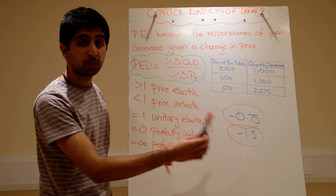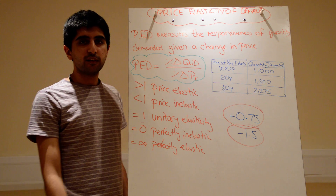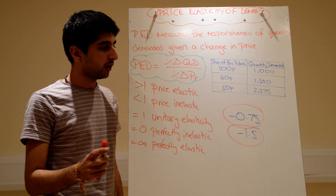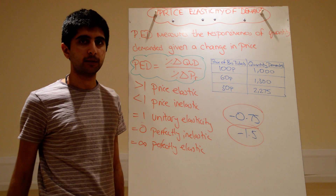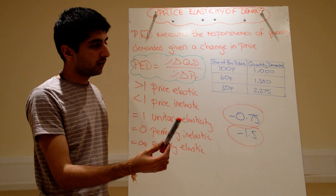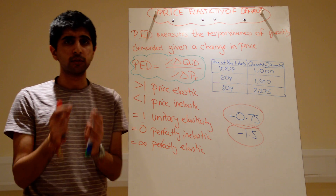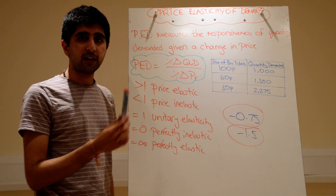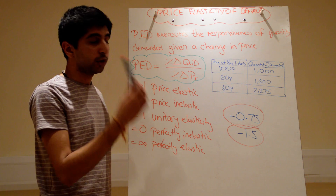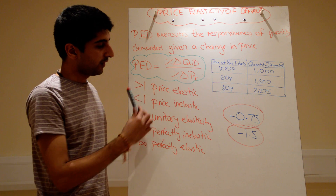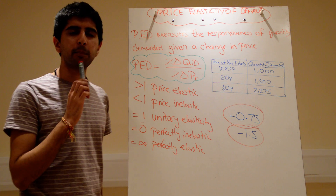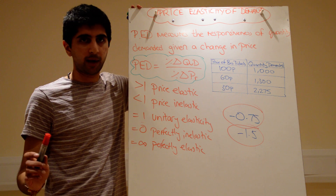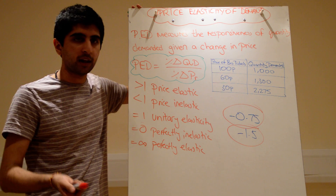Whereas with the second figure of 1.5, demand for this good is price elastic. Consider: the price goes up by 10% — demand is going to fall by 15%. So demand responds more than proportionately to the change in price; the percentage change in quantity is greater than the percentage change in price. We say that's elastic — a very responsive, elastic response. The number one is very important when interpreting elasticity figures: greater than one, demand is price elastic; less than one, demand is price inelastic. Make sure you say 'price elastic' and 'price inelastic', not just 'elastic'.